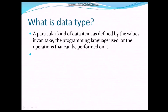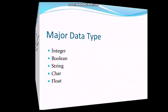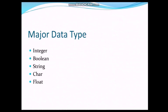What is a Data Type? A particular kind of data item, as defined by the values it can take, the programming language uses, or the operations that can be performed on it. Major Data Types: integer, boolean, string, character, float.